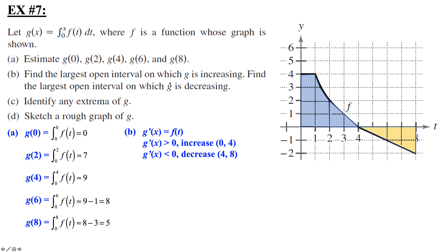Find the largest open interval on which g is increasing. Remember, f is the same as g prime. Here I have positive y-coordinates for g prime, so I'm increasing from 0 to 4. Then I have negative y-coordinates, so I'm decreasing from 4 to 8. Identify extrema of g: at x equals 4, we cross the x-axis — that's the critical number — going from increasing to decreasing, so that's a local max. The y-coordinate of g of 4 was approximately 9, so the relative max is at the point (4, 9).